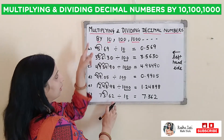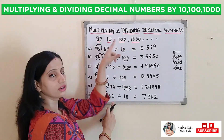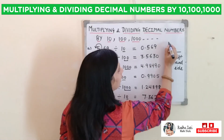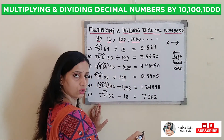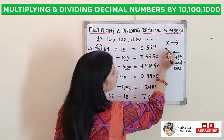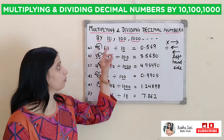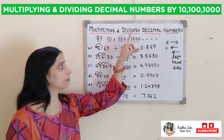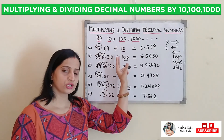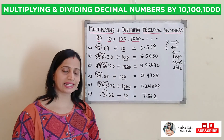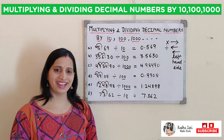While multiplying or dividing decimal numbers by 10, 100, or 1000, only remember: when we multiply, our decimal will shift to the right side; when we divide, our decimal will shift to the left side. I hope you understood how to multiply and divide decimal numbers by 10, 100, or 1000. If you like this video, please share it and subscribe to my channel. See you in the next video. Till then, goodbye, take care.